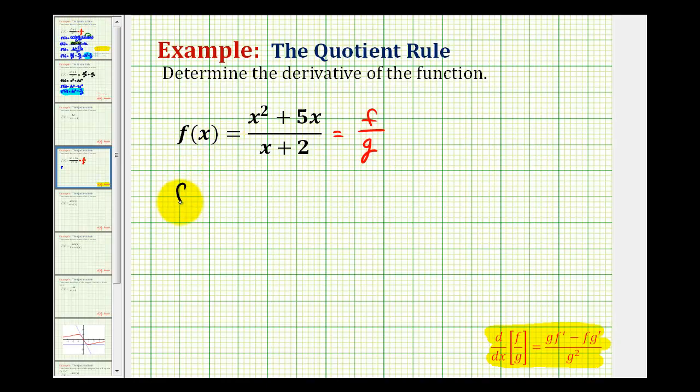So for this example f prime of x is going to be equal to, our denominator will be g squared or the quantity x plus two squared. The numerator is going to be g times f prime minus f times g prime. So we have g, x plus two times f prime,